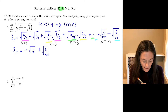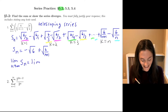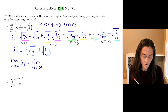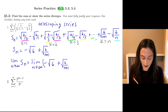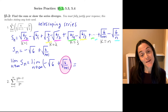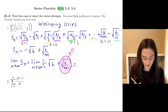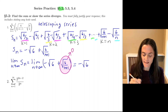We can now calculate the sum of the series: the limit as n→∞ of S_n. By definition, this is the sum of the series, provided the limit exists as a finite number. The denominator grows without bound with a fixed numerator, so √(6/(n+1)) → 0, leaving us with negative √6 as the sum of the series.